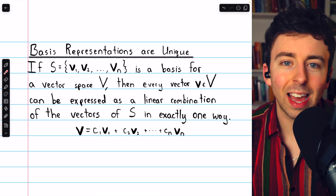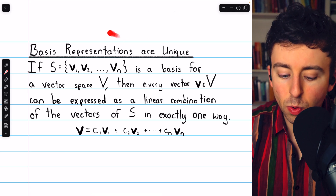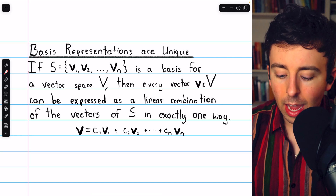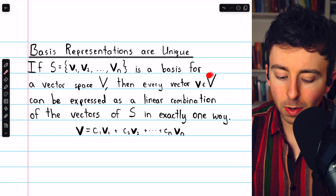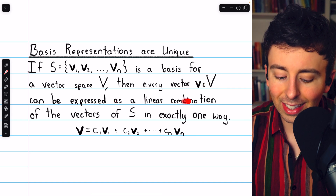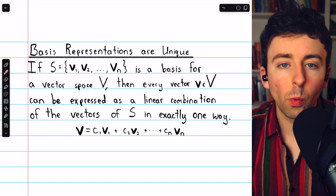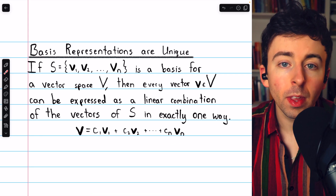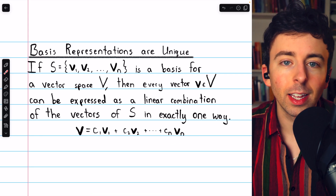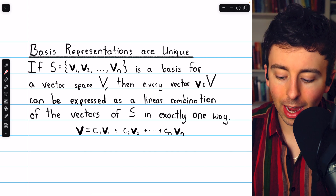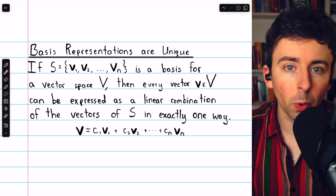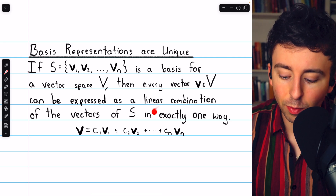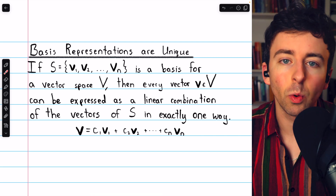Two quick things before we introduce that definition. First, the uniqueness of basis representations. If we have a basis for a vector space V, then every vector in that vector space can be expressed as a linear combination of the vectors in the basis in exactly one way. So if we have a basis for a vector space V, then certainly by definition any vector in V can be expressed as a linear combination of the vectors in the basis, and furthermore that expression is unique — it can be done in exactly one way.